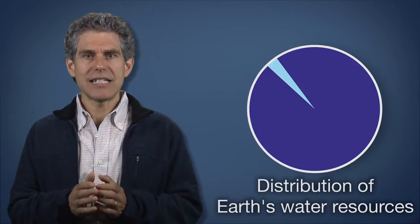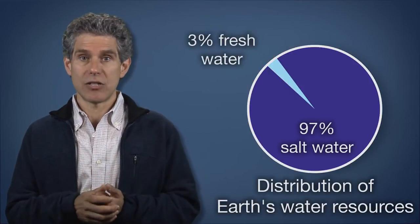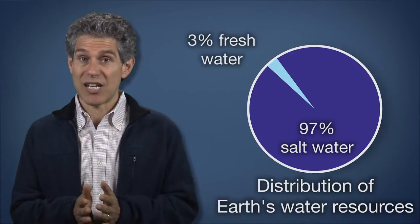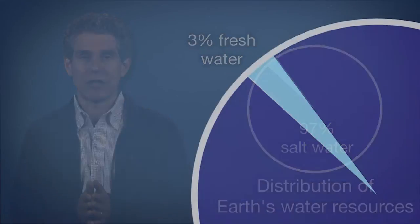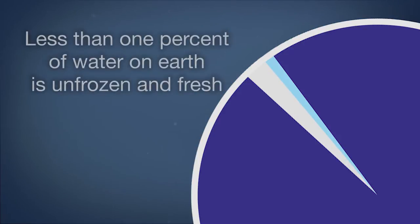On Earth, about 97% of our water is in the oceans, and less than 3% is fresh water. Of fresh water on Earth, slightly more than three quarters of that is stored in ice or glaciers, so less than 1% of water on Earth is unfrozen fresh water that is potentially readily available for human use.